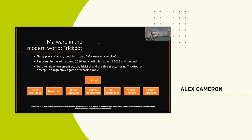Law enforcement does try their best to take out TrickBot, but by the time you take down one server, attackers can stand up another — recompile the code, set up new command and control servers, and they're up and away. It's just an ever-increasing game of whack-a-mole, and this is really the case with a lot of threat actors and malware, this constant back and forth between attackers and defenders.